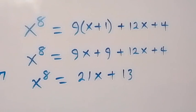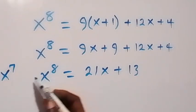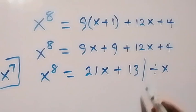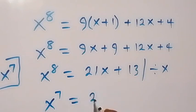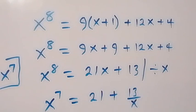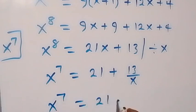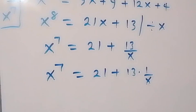We are interested in x to the power 7, and we have x to the power 8. So we divide through by x. This gives x to the power 7 equals 21 plus 13 over x. Recalling that x equals (root 5 plus 1) over 2, we need to evaluate 1 over x.